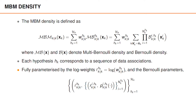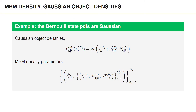Predicting and updating the multi-Bernoulli mixture density comes down to computing the predicted and updated parameters. For example, if we have Gaussian object densities with means mu and covariances P, then the multi-Bernoulli mixture parameters are the log weights for each multi-Bernoulli, and for each Bernoulli we have the probability of existence, the mean mu, and the covariances P.